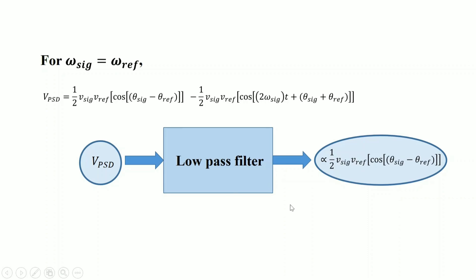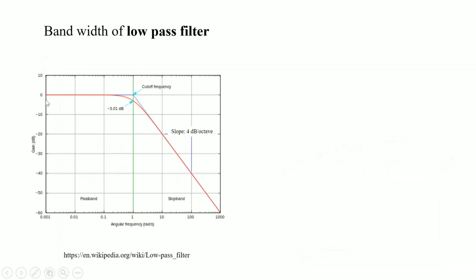This is only possible for the ideal case. In practice, there will be noise along with the signal, and because of the finite bandwidth of the low-pass filter, some noise will pass through along with the input signal. This is a plot of gain versus frequency for the low-pass filter. The bandwidth is defined as the point where the gain drops to minus 3 dB. Beyond this point the gain changes rapidly with frequency.